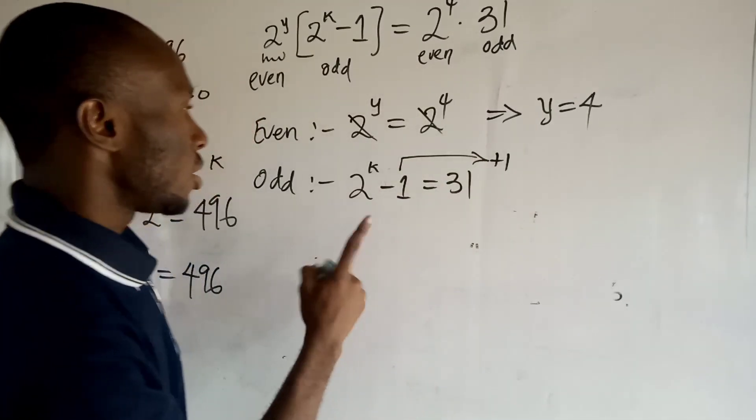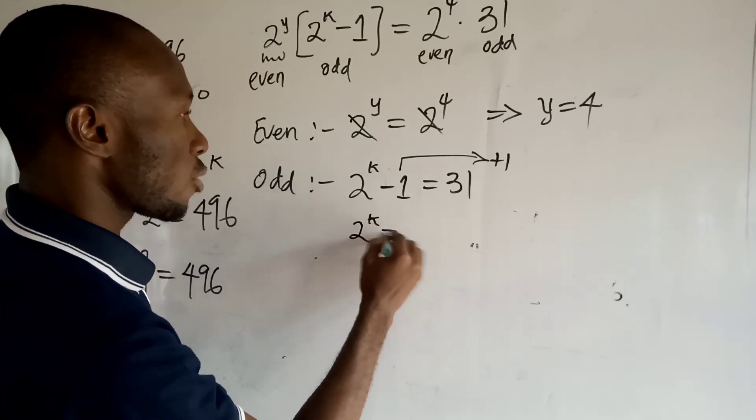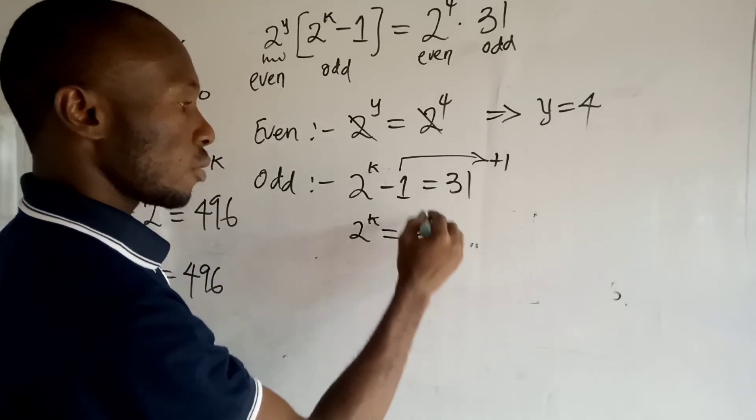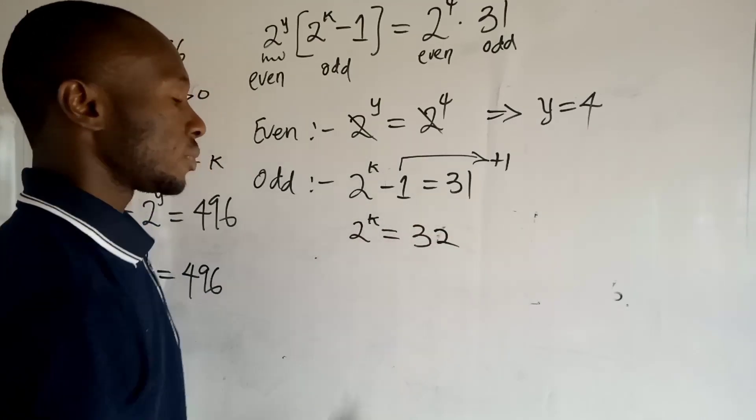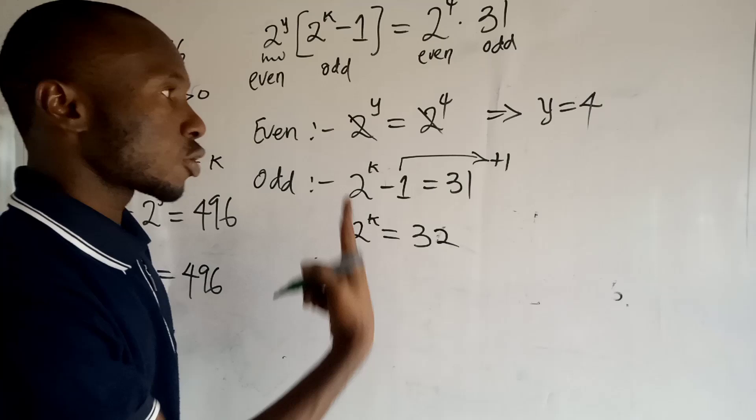So of course I'll collect like terms. This guy moves back to this point and becomes plus 1, so I'll have 2 to the power k is equal to 31 plus 1, which will give me 32.